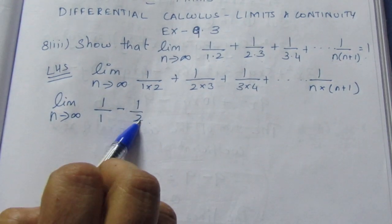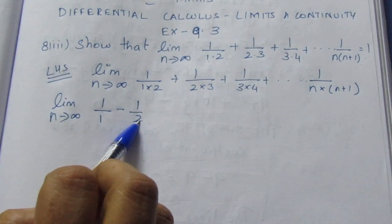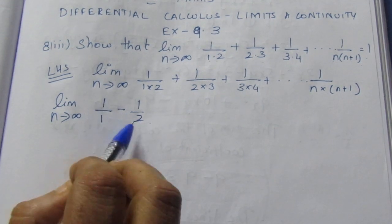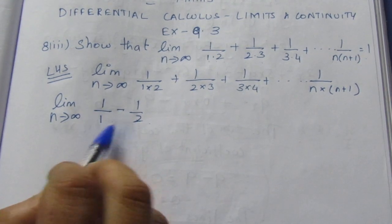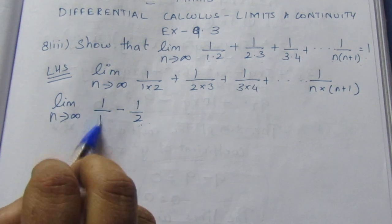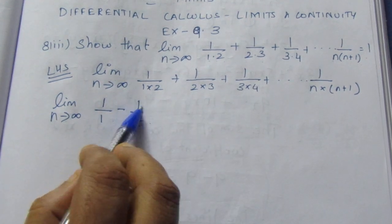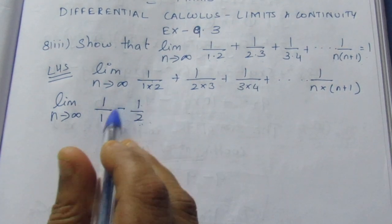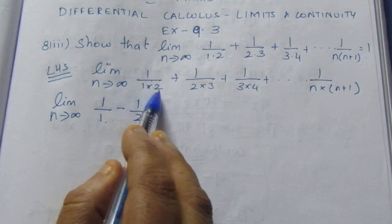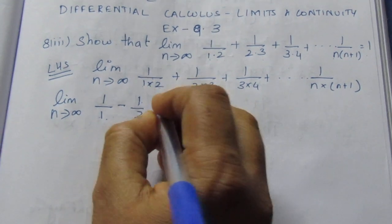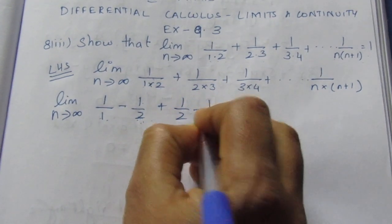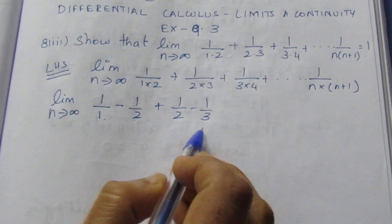When we get each term, we can split it using partial fractions. For example, 1/(1×2): since 2-1=1, we can write this as 1/1 minus 1/2. You multiply into the denominator and split up each term this way.